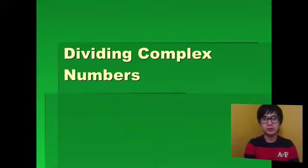Now let's divide complex numbers. One rule about complex numbers is you're not supposed to have a complex number in a denominator. So how do you get rid of i or a complex number in a denominator?